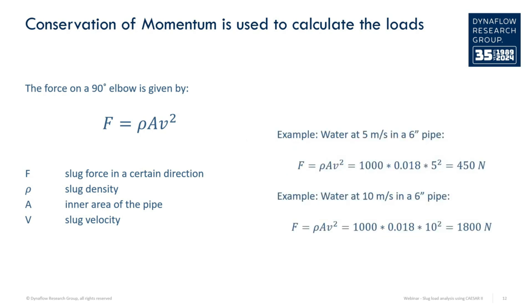So what sort of forces can be expected from a slug traveling through a piping system? As an example, a slug formed by water traveling at 5 meters per second in a 6 inch pipe gives a force of about 450 Newtons, while at 10 meters per second it increases to almost 2 kilonewtons.